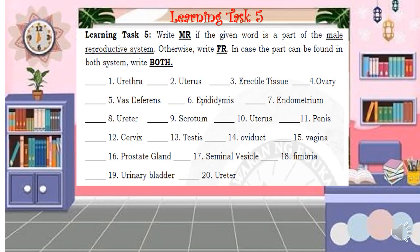For Learning Task 5, write MR if the given word is part of the male reproductive system, FR if it is part of the female reproductive system, or BOTH if the part can be found in both systems.